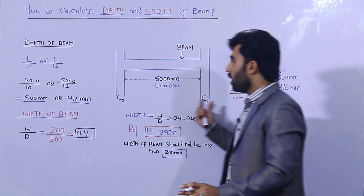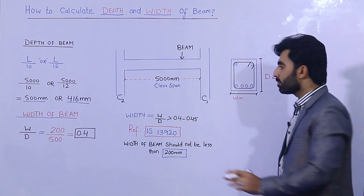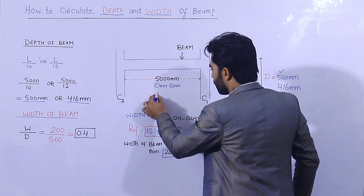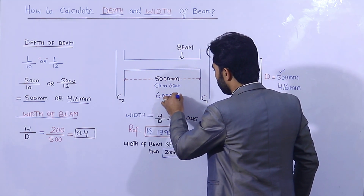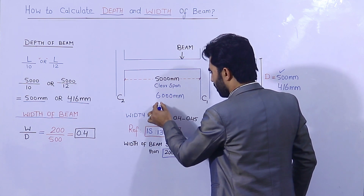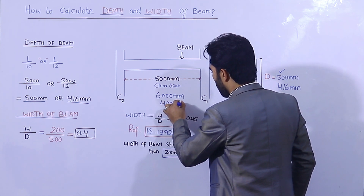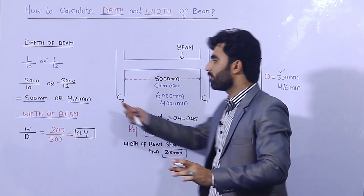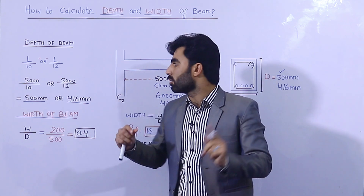This is the formula to find the depth of the beam. If the span is about 6000 mm or 4000 mm, you can use the same thumb rule formula I have discussed.